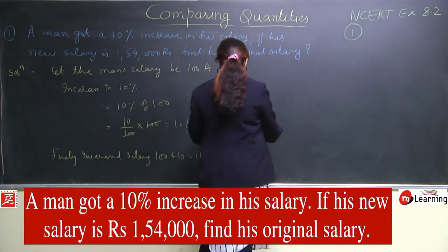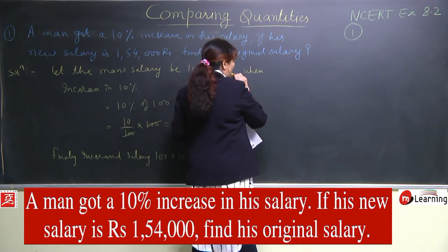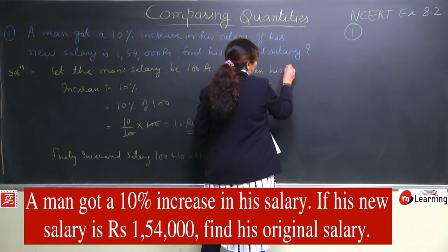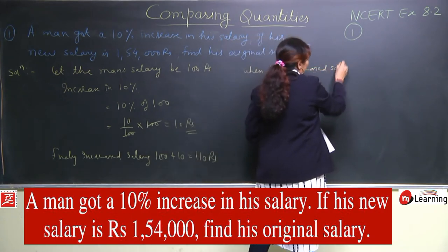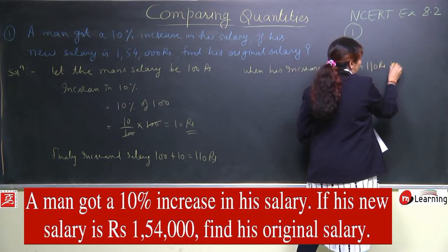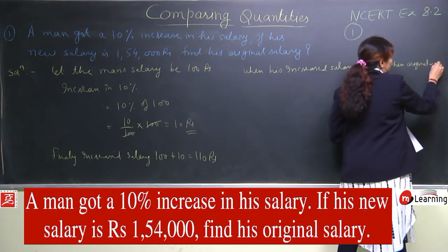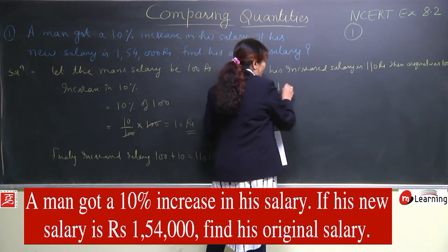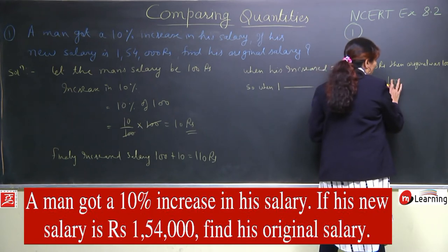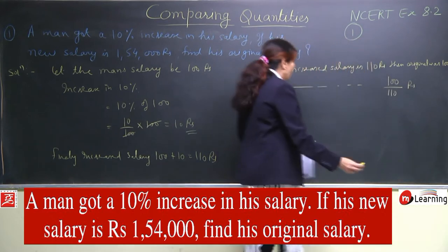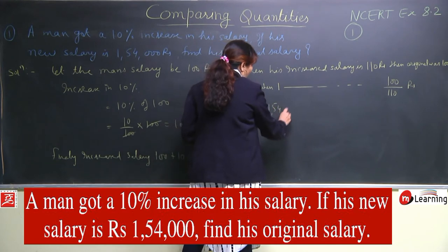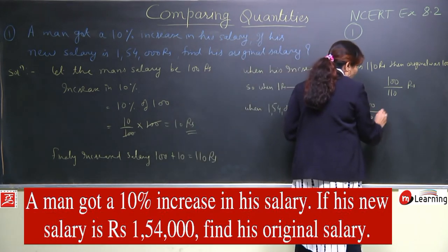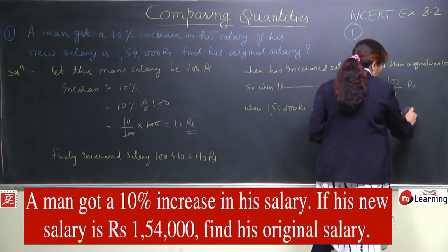Ab aap unitary method lagaenge. When his increased salary is 110 rupees, then original was 100 rupees. So when his salary is 1 rupee, original was 100/110 rupees. When his increased salary is 1,54,000 rupees, then original = 100/110 × 1,54,000.